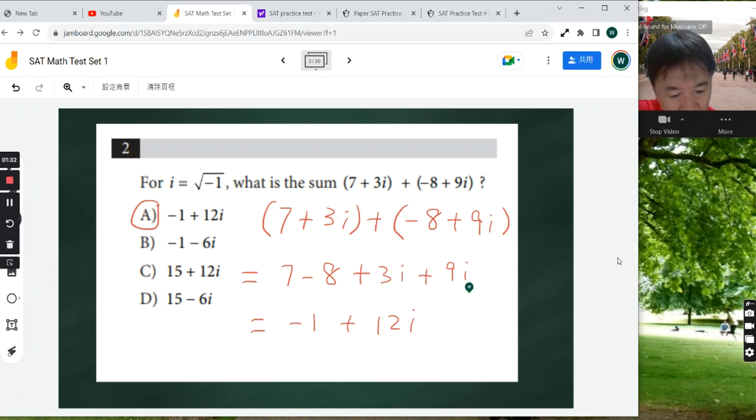So the first two will give you negative 1. 3i plus 9i is going to give you 12i. So the answer is minus 1 plus 12i, which is A.